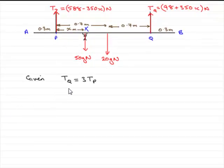Now, in this part of the question, we're told that the tension in rope Q is three times the tension in rope P, and asked to find the value of x.